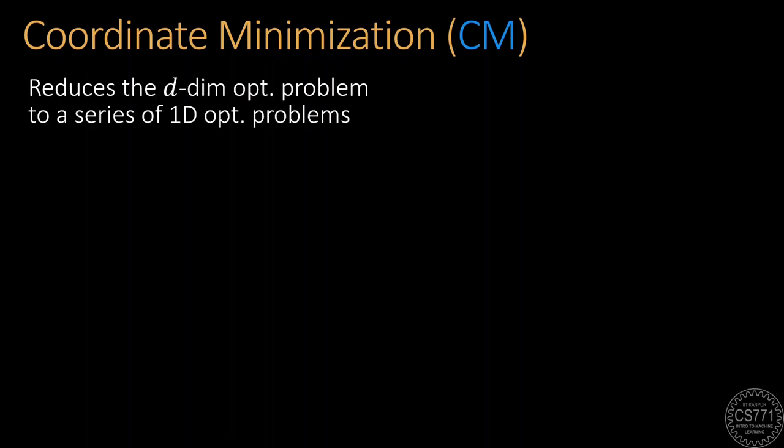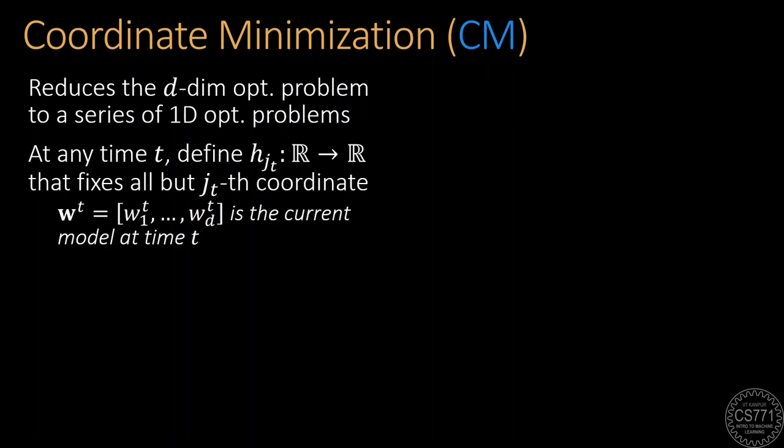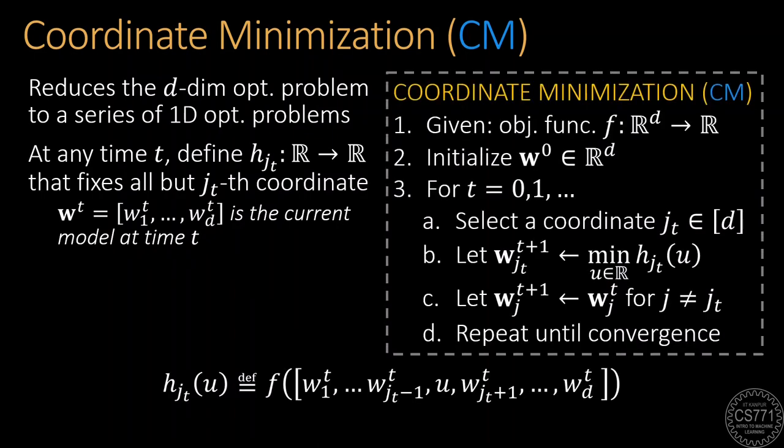An intriguing variant of coordinate descent that deserves special mention is coordinate minimization which reduces the original d-dimensional optimization problem into a series of one-dimensional optimization problems. Just like coordinate descent, coordinate minimization also updates a single coordinate in each iteration. However, unlike coordinate descent that just takes a descent step along the chosen coordinate, coordinate minimization completely minimizes the function along that coordinate. This is usually possible in several machine learning applications, some of which we will see in future discussions.